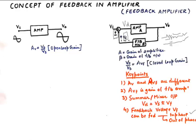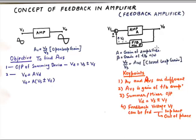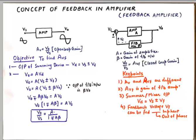So our objective becomes finding AVF. I'll start with the first step. The output of the summing device is Vd which is Vs plus minus Vf. And my V0 is going to be A into Vd where A is just the gain of the amplifier. So I substitute the value of Vd as Vs plus minus Vf.